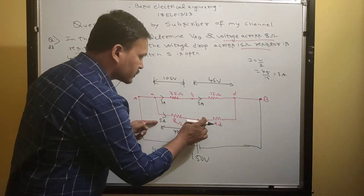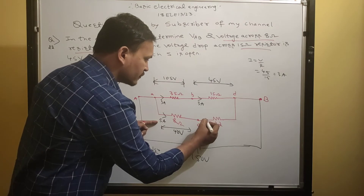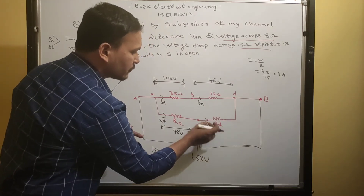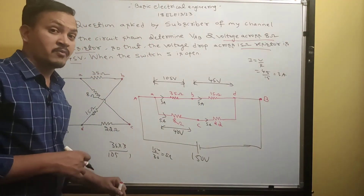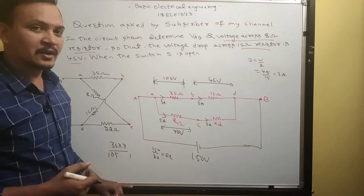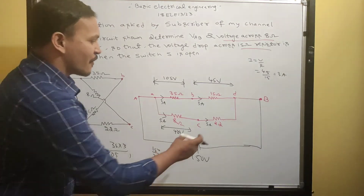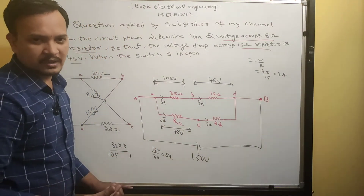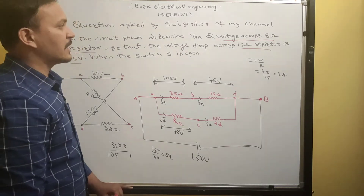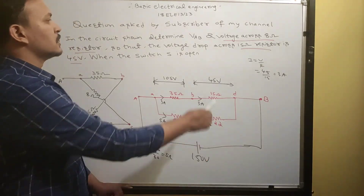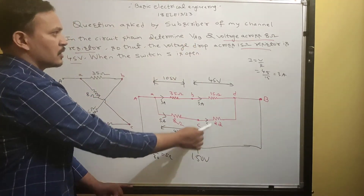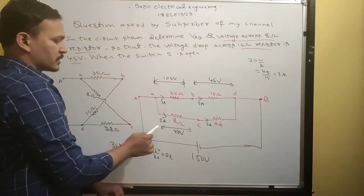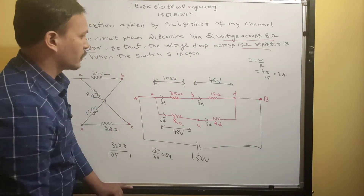Same 5 ampere current flows here. 22 × 5 = 110 volts across the 22 ohm resistor. 110 + 40 = 150 volts — which confirms our answer. So the final answers are: VAB = 150 volts, and voltage across 8 ohm resistance = 40 volts.